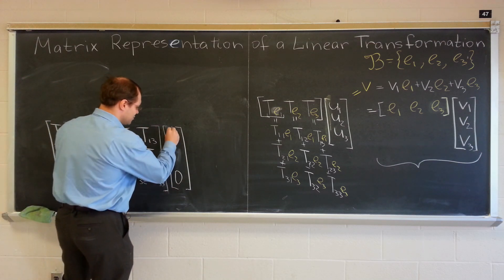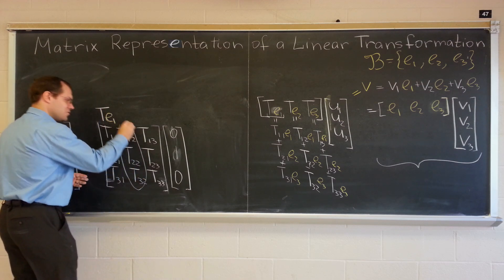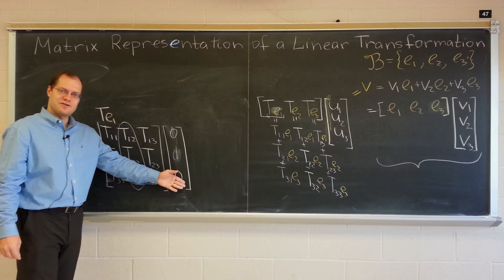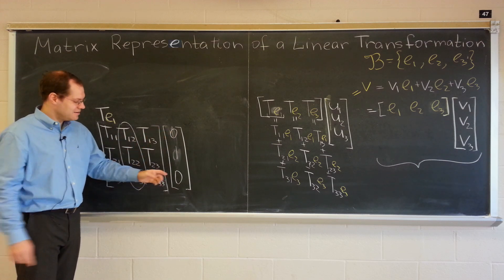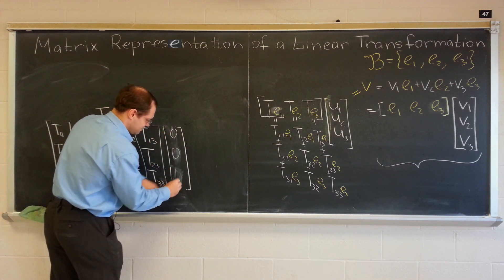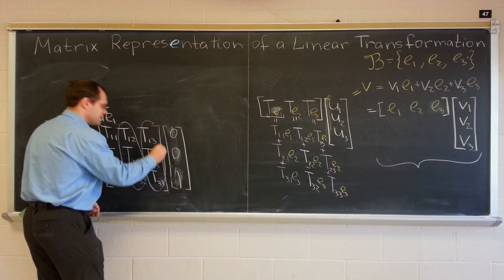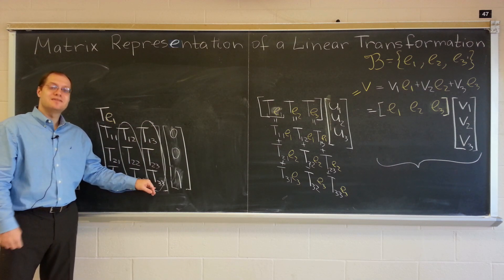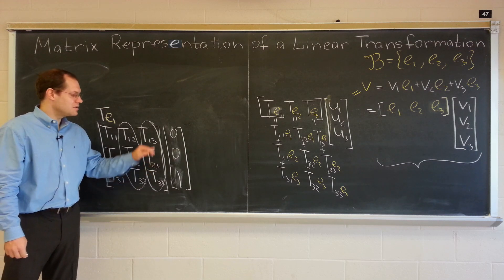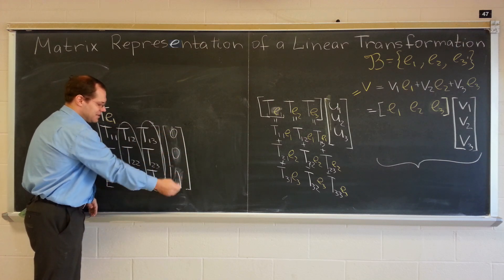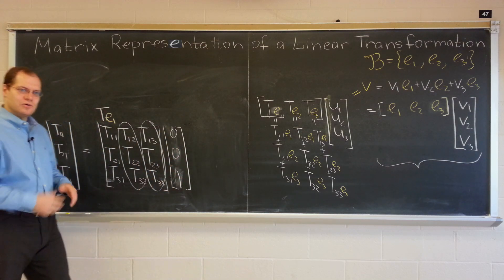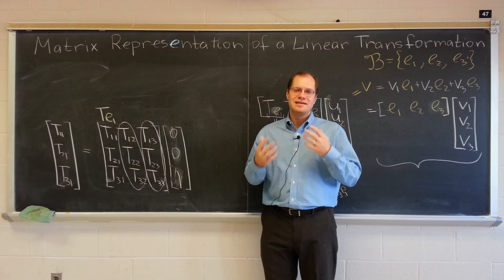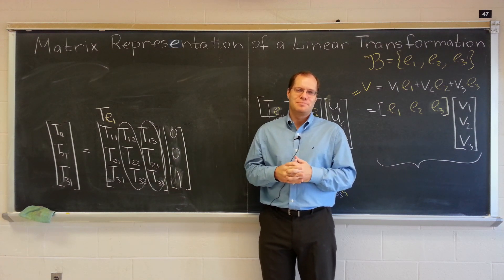The same would be true for the second basis element — it produces the second column, and for the right input it gives the right output. Similarly for the third basis vector, it will do the right thing: from the components of the input it produces the components of the output, by the very construction. That's what we put in these columns — the very numbers that are the components of the output for the basis vectors. That's why that's the matrix that represents the linear transformation with respect to the particular basis.